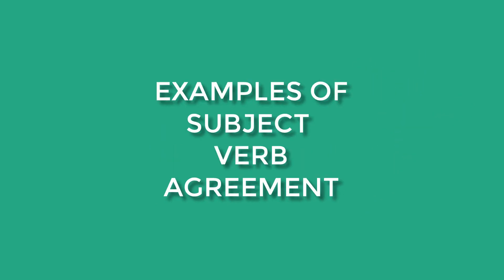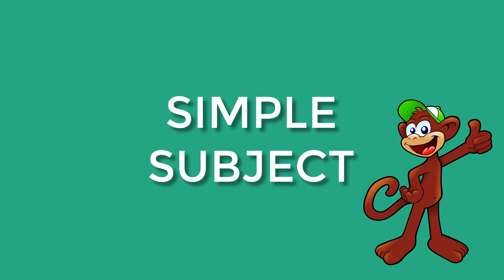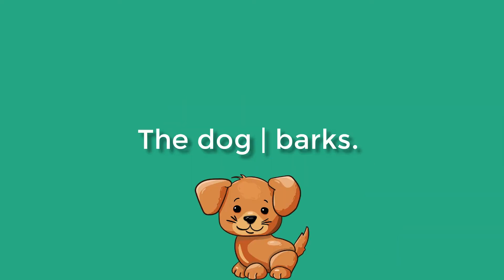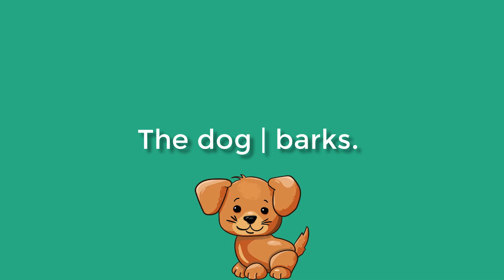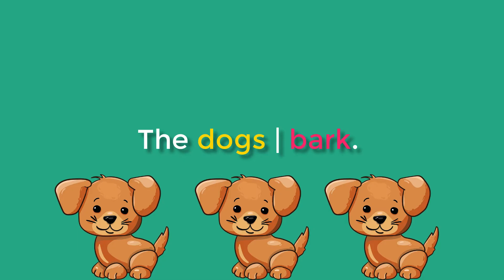Let's go on to examples of subject-verb agreement with simple subjects. For the most part, subject-verb agreement is fairly straightforward when it comes to simple subjects. The dog barks. The dogs bark. Notice the singular noun, dog, takes on the singular verb, barks. And the plural noun, dogs, takes on the plural verb, bark.